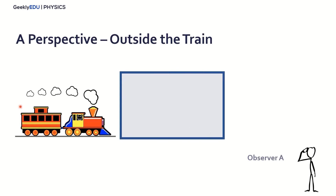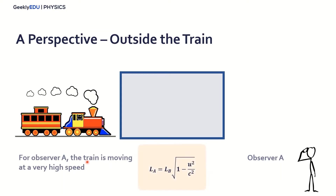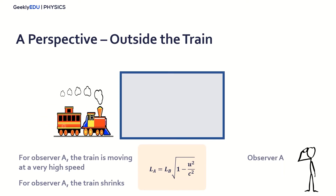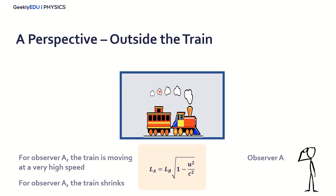So the train is at a very high speed. If you remember, at very high speeds we have length contraction. So observer A is actually seeing the train move at a very high speed, and if you remember the equation from our previous videos, the length for A will actually be shorter than the length for B. So the length of the train is smaller. For observer A, the train shrinks, so he would see something like this. The tunnel is not moving and would be the same size for observer A, but the train would shrink, and he would see that the train fits perfectly inside the tunnel.